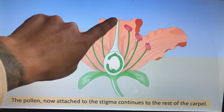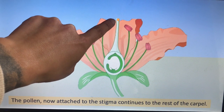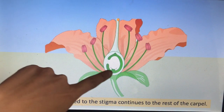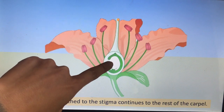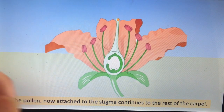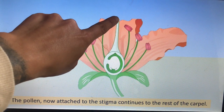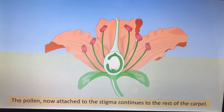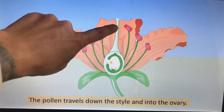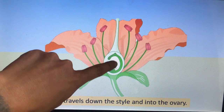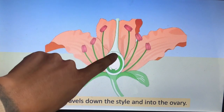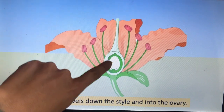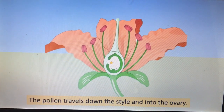The pollen is the male sex cell or male gamete, and the ovule is the female gamete or sex cell, so they need to join together just like a sperm and an egg. The pollen has to get all the way down the style, through the ovary, and into the ovule. What it does is create a tube — it causes a tube to form and just goes down that tube and into the ovule.